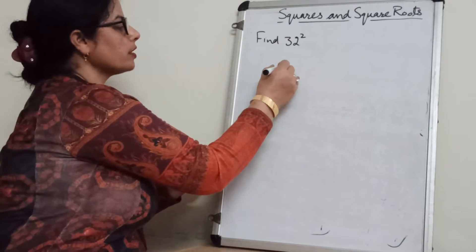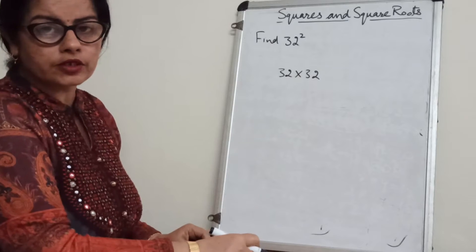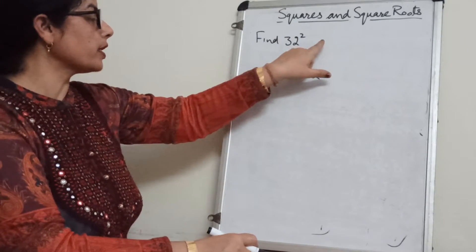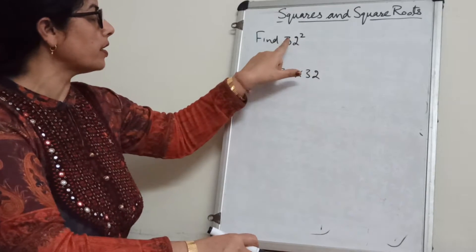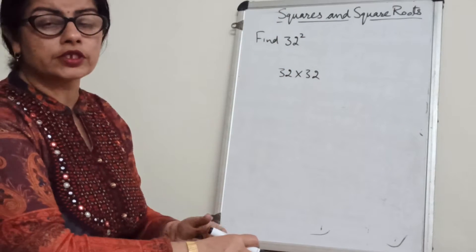You know how we will find 32 squared means 32 multiply 32. Anyone can do like this. But the question is without actual multiplication find the, without multiplication find the square of 32. This is the question here.